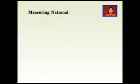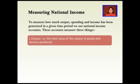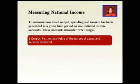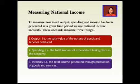To measure how much output, spending, and income has been generated in a given time period, we use national income accounts. These accounts measure three things: first, output — the total value of goods and services produced; second, spending — the total amount of expenditure taking place in the economy; and third, incomes — the total income generated through production of goods and services.